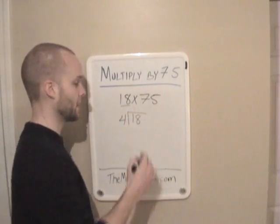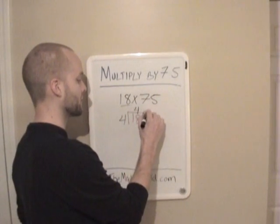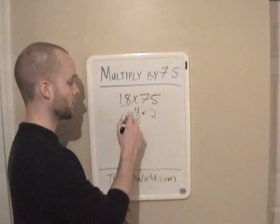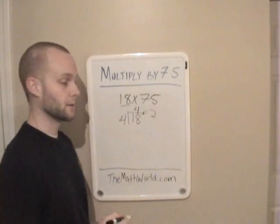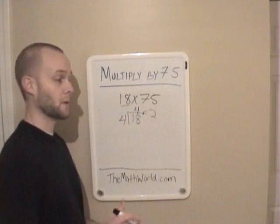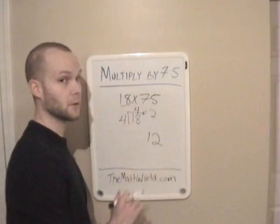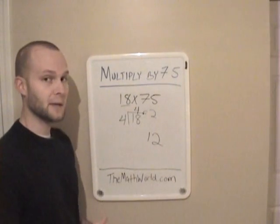So we're going to take 18 and we're going to divide this by 4. Now 4 goes into 18 four times with a remainder of 2 and this 2 is very important. But the first step we want to do is we want to take this 4 as our answer and we want to multiply that by 3. So 4 times 3 is 12.